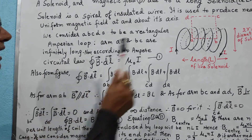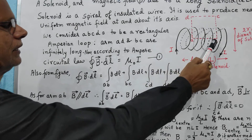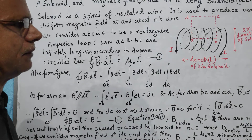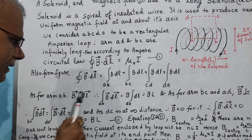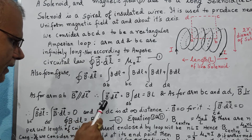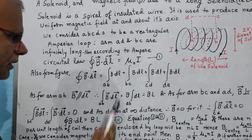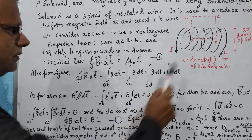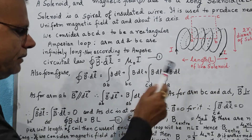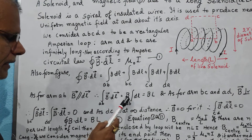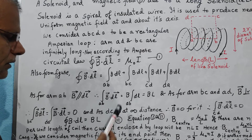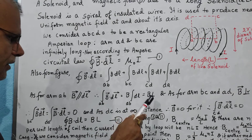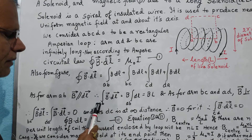For the first case, for arm AB, the magnetic field and the dL element will be along the arm AB. The magnetic field and the loop element dL will be parallel, and therefore the integral for AB — the integral of B dot dL for AB — will be B times the integration of dL, and the total length of the loop will equal the length of the loop AB, that is L. So the integration for arm AB is equal to BL.